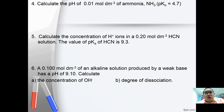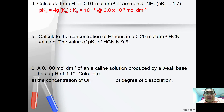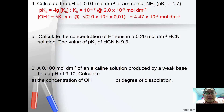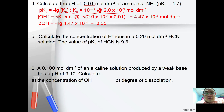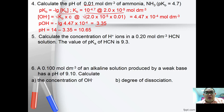Number 4: calculate the pH of 0.01 mol/dm³ of ammonia, given pKb = 4.7. Anti-log the pKb to get Kb = 2.0×10⁻⁵. Use [OH⁻] = square root of Kb times C; substituting gives 4.47×10⁻⁴. Then pOH = −log(4.47×10⁻⁴) = 3.35, so pH = 14 − 3.35 = 10.65.